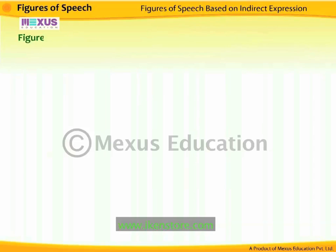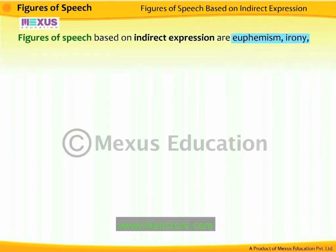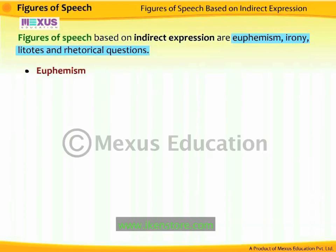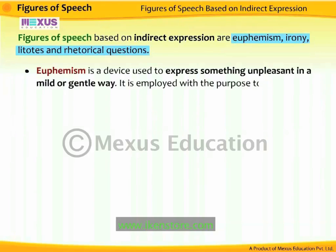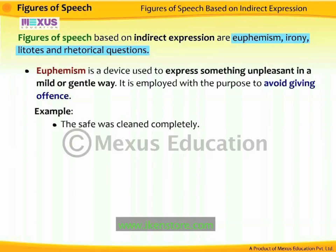Figures of speech based on indirect expression are euphemism, irony, litotes, and rhetorical questions. Euphemism is a device used to express something unpleasant in a mild or gentle way, employed to avoid giving offence. For example, 'the safe was cleaned completely' — this means that the safe was robbed.